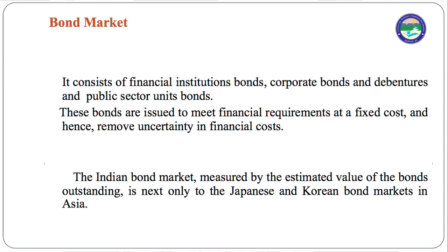The bond market consists of financial institution bonds, corporate bonds, debentures, and public sector unit bonds. These bonds are issued to meet financial requirements at a fixed cost, removing uncertainty in financial cost. The Indian bond market, measured by the estimated value of bonds outstanding, is next only to the Japanese and Korean bond markets in Asia, standing at number three in Asia.